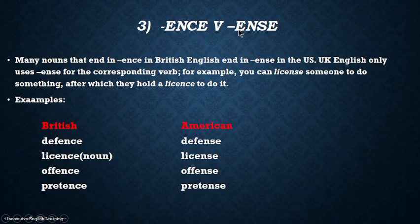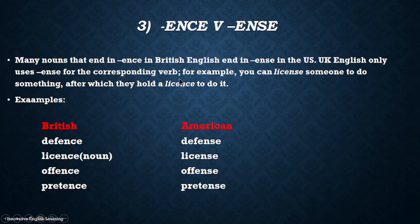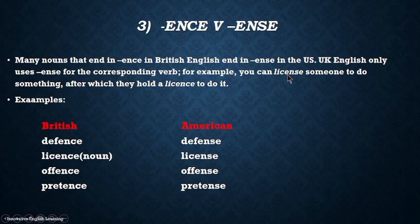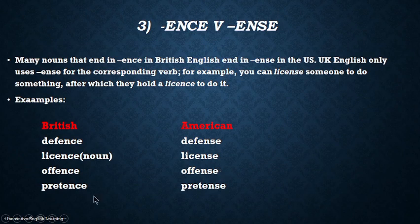Next we have '-ence' versus '-ense'. Many nouns that end in '-ence' in British English end in '-ense' in American English. British English only uses '-ense' for the corresponding verb form. For example: defence vs. defense; licence (noun) vs. license; offence vs. offense; pretence vs. pretense.